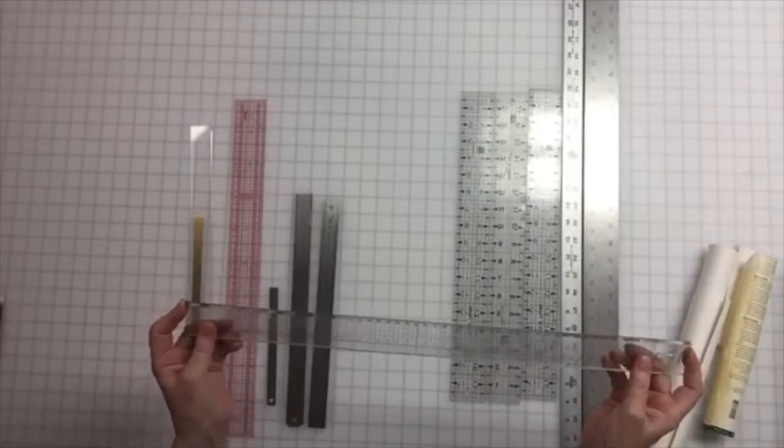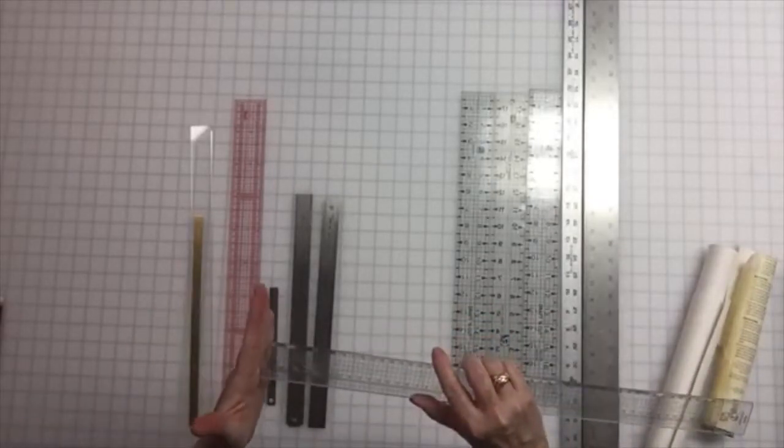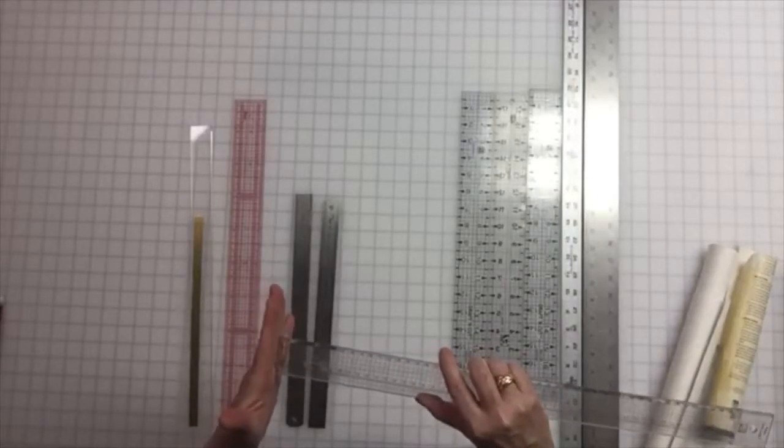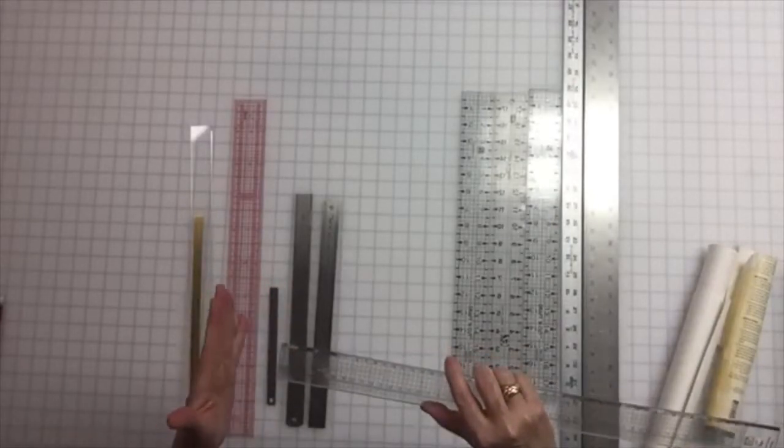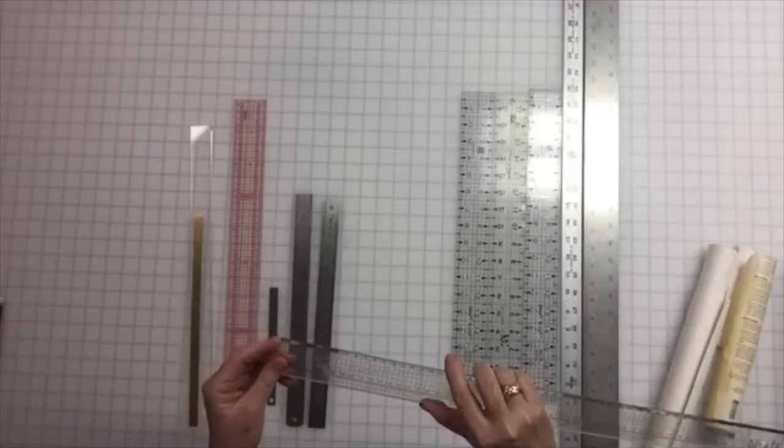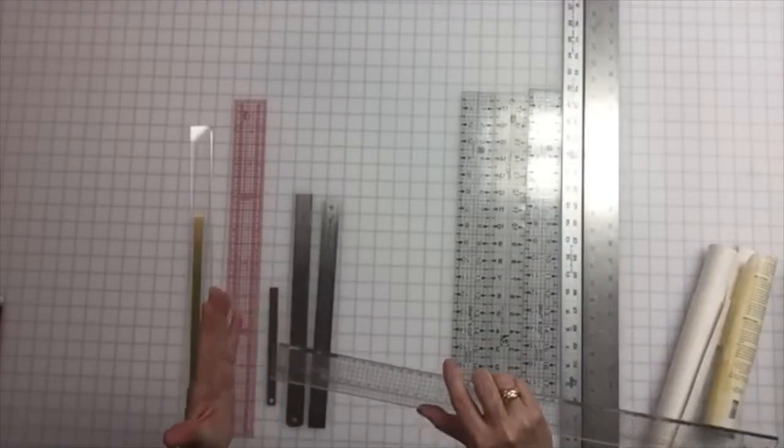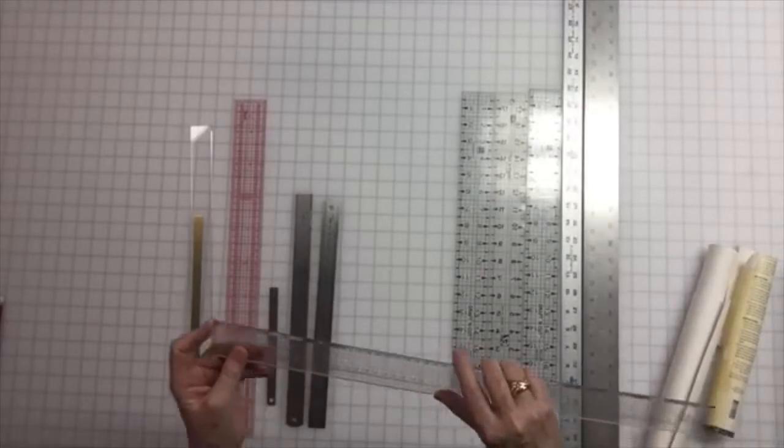The other important thing with all these rulers is you want something that measures the whole way to the end. You don't want the measurement to stop and there to be a gap, because that's impossible to line up every single time. You want to be able to put your leather right up to the edge and know that the measurements are starting.